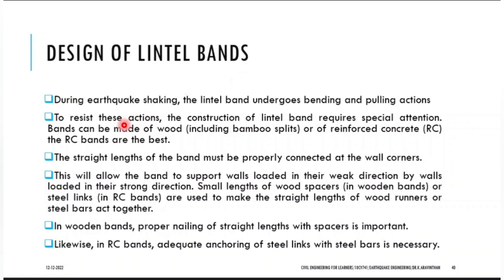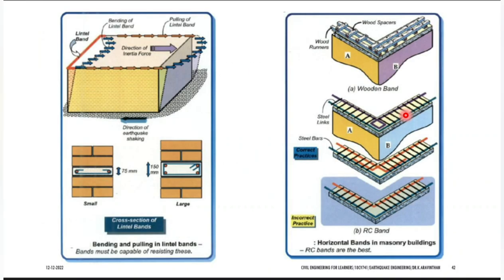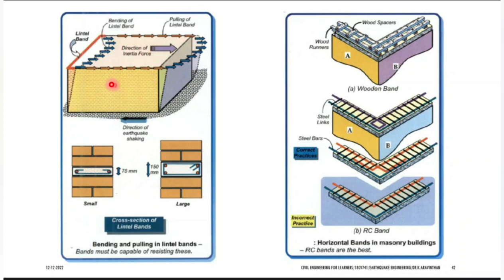A guideline gives the amount of reinforcement required and the minimum dimensions to satisfy band action. When an earthquake occurs, the lintel band undergoes bending and pulling action. The building goes to and fro — this is the direction of earthquake shaking. There is bending as well as lateral movement, similar to a cantilever structure fixed at one side, creating a bending force in the lintel band.